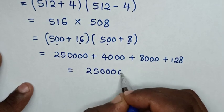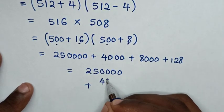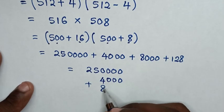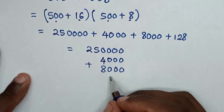So the sum is 250,000 plus 4,000 plus 8,000 plus 128.